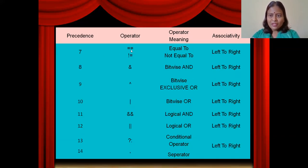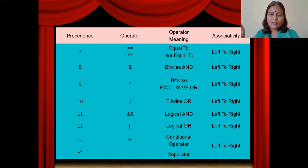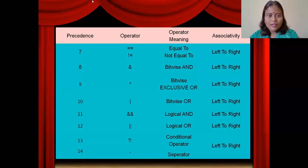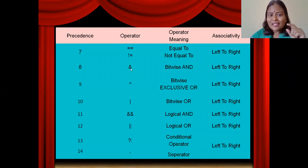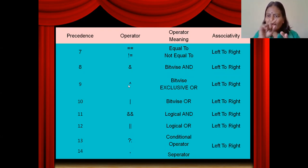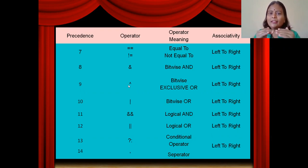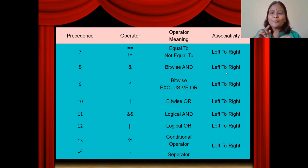The seventh priority goes to equal-to and not-equal-to operators. If both happen to be in the same expression, then left-to-right associativity plays a role. Bitwise AND operator has more priority than bitwise XOR and bitwise OR operators. For example, in an expression A AND B XOR C, where the AND operator is present, A AND B will start evaluating first, then the result is XORed with C. If the same AND operation is repeated — for example, A AND B AND C — then left-to-right associativity is considered.